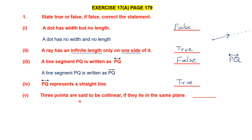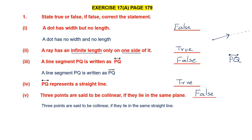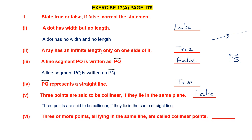Question 5. Three points are said to be collinear if they lie in the same plane. Now, collinear points are three or more points which lie on a straight line, so this statement is false. You can have many points in a plane, but only if three or more lie on the same straight line can you call them collinear. The correct statement is: three points are said to be collinear if they lie on the same straight line. Next: three or more points all lying in the same line are called collinear points — this statement is true.